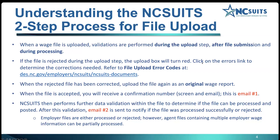When the file is accepted, you're going to receive an initial email — this is email number one — with a confirmation number. It's simply saying we received your file; you've uploaded, submitted, and we've received it. Then NCSUITS is going to perform further data validation against that file to see if it can be processed and posted. For this validation, you're going to receive a second email notifying you if the file was processed successfully or rejected. Both emails will share the same confirmation number.